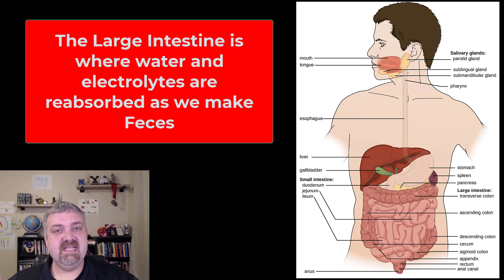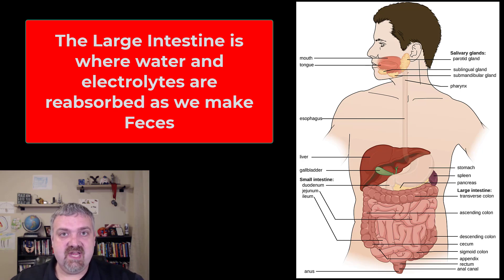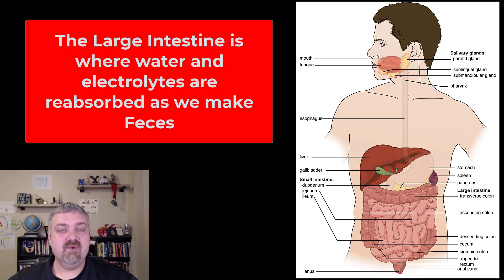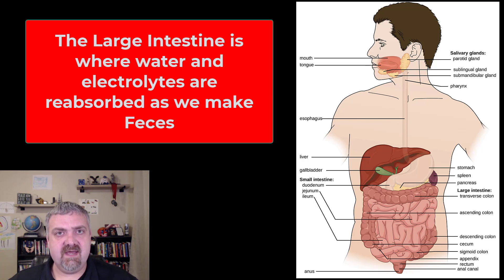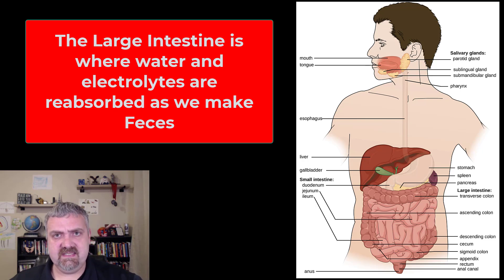The large intestine begins with a structure called the cecum, a pouch that receives whatever's coming from the small intestine. Then we travel up the ascending colon, transverse colon, the descending colon, the sigmoid colon — known for its S-shaped curve — down into the rectum and anus. In the large intestine, the key functions are the reabsorption of water. You've put liters of fluid into your GI tract every day to properly digest, move, and absorb food, and you want to reabsorb most of that or else you'd always have diarrhea, which would be life threatening. The rectum and anus handle temporary storage of feces before defecation.